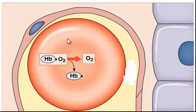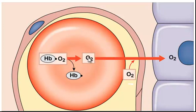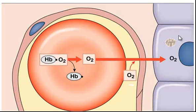Once the red blood cells arrive at the peripheral tissues, the oxygen will dissociate from the hemoglobin — hemoglobin and oxygen will separate. Oxygen from the red blood cells will diffuse into the capillary, and from the capillary it will diffuse into the interstitial fluid, and from the interstitial fluid the oxygen will enter the cell.